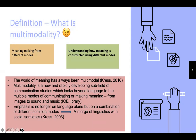Multimodality is a new and rapidly developing subfield of communication studies, which looks beyond language to the multiple modes of communicating or making meaning — for example, from images to sound and music. So the emphasis now is no longer on language alone, but on a combination of different semiotic modes.